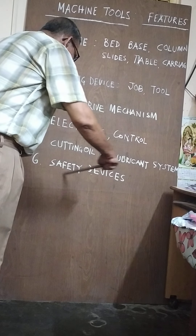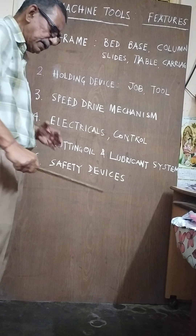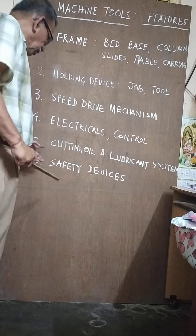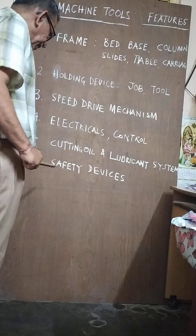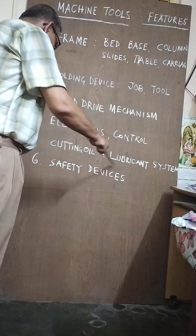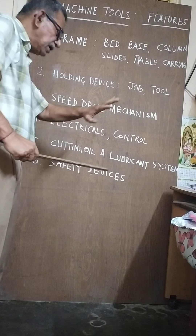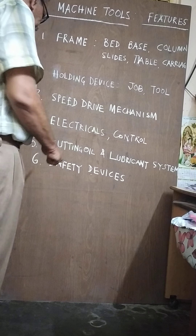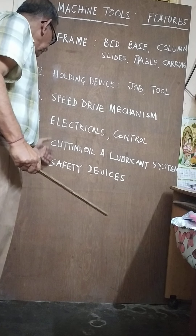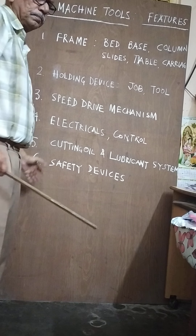The sixth feature is safety devices. Safety devices are needed to prevent accidents. Moving parts should be properly baffled and guarded, with a proper guarding system. These features together constitute the complete features of a machine tool.